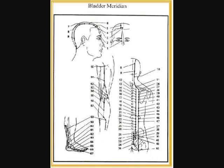UB60 continued: swelling and pain of the heel, difficult labor, epilepsy. UB61: muscular atrophy, weakness of the lower extremities, pain in the heel. UB62: epilepsy, mania, headache, dizziness, insomnia, backache, aching of the leg. UB63: mania, epilepsy, infantile convulsion, backache, pain in the external malleolus, motor impairment and pain of the lower extremities. UB64: headache, stiff neck, pain in the lower back and thigh, epilepsy.